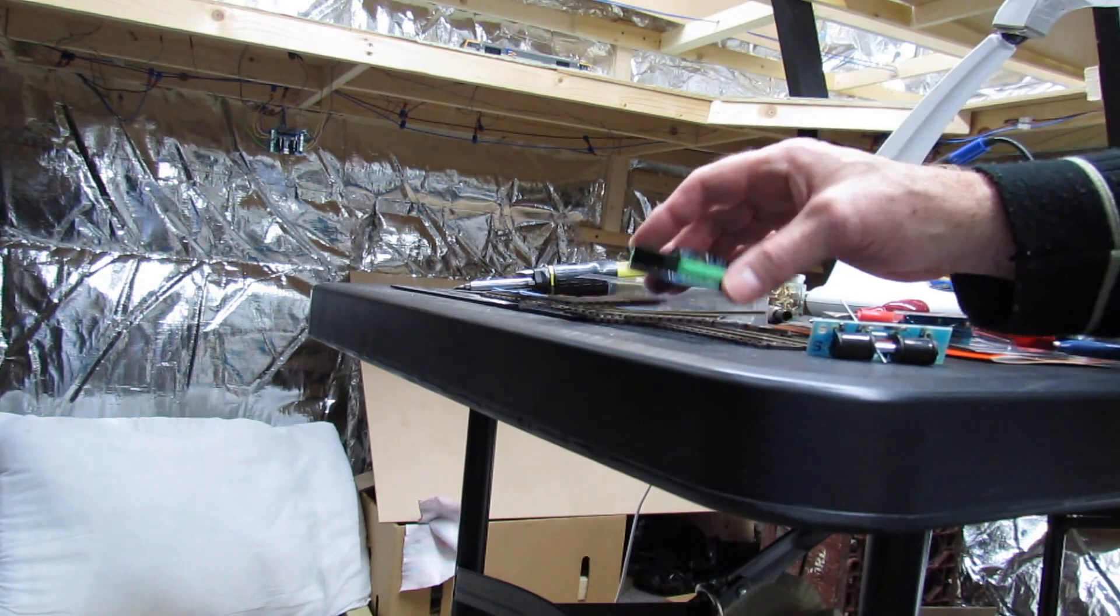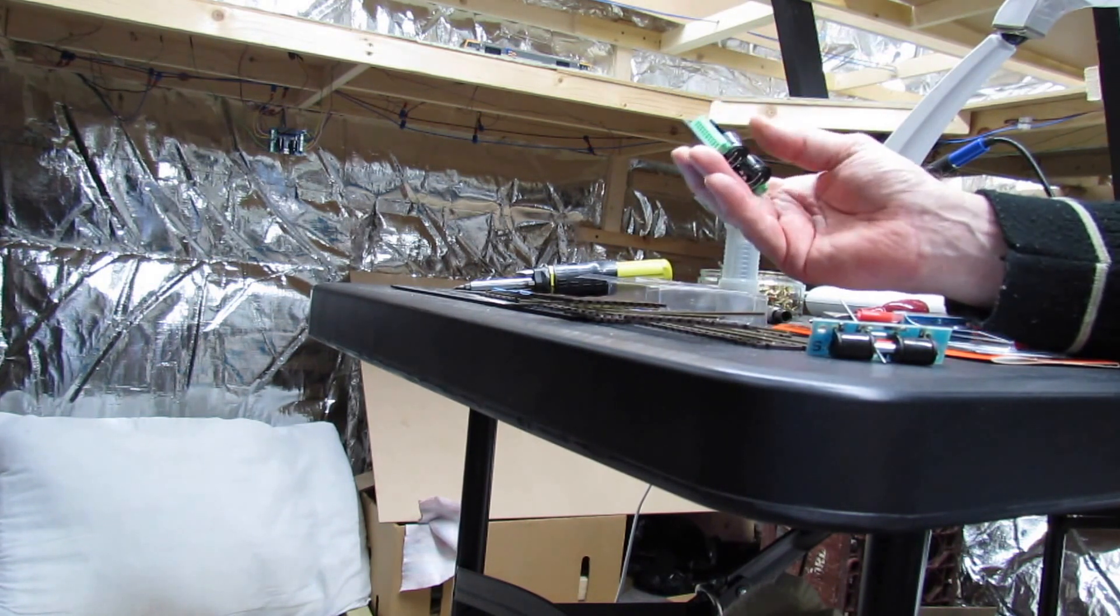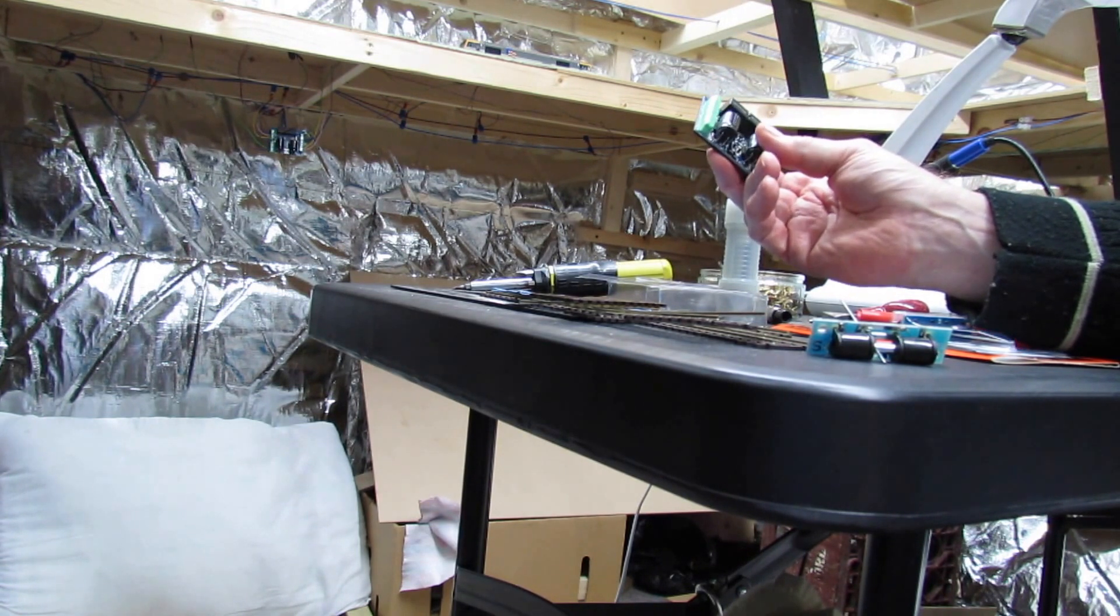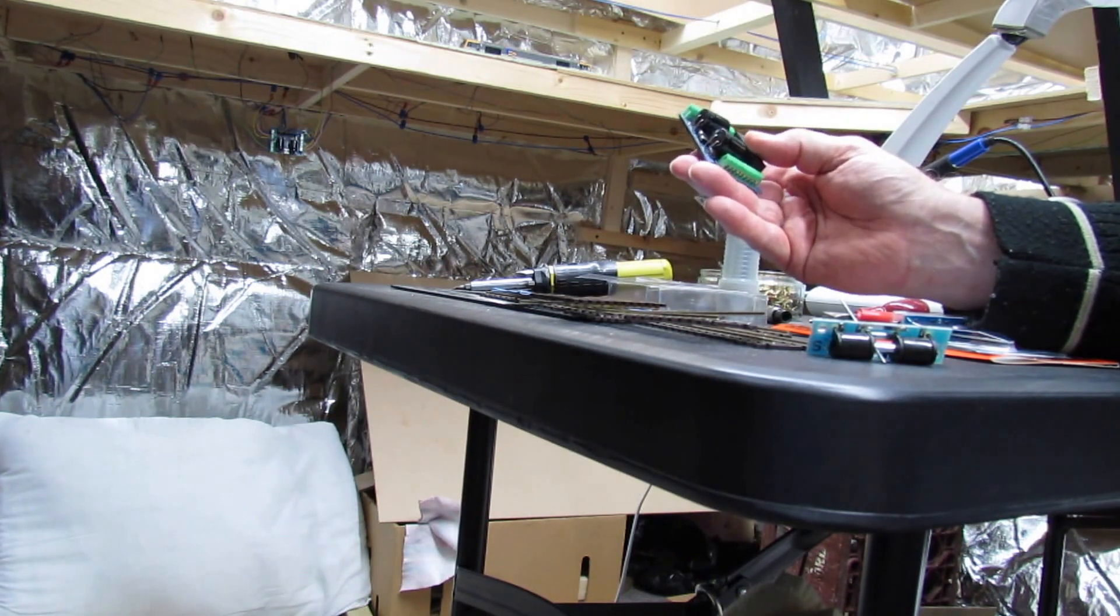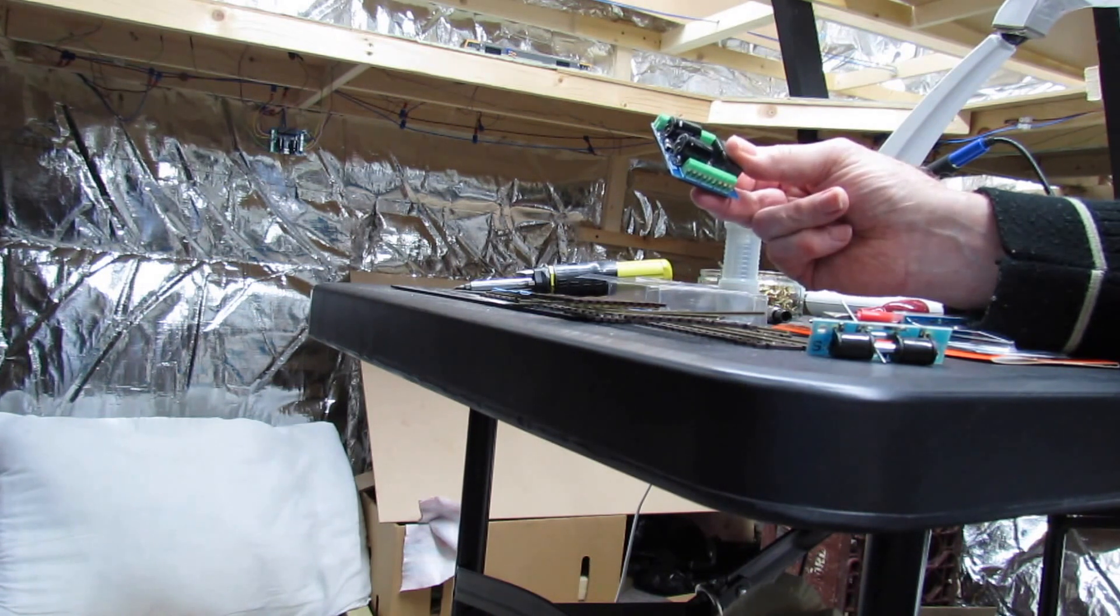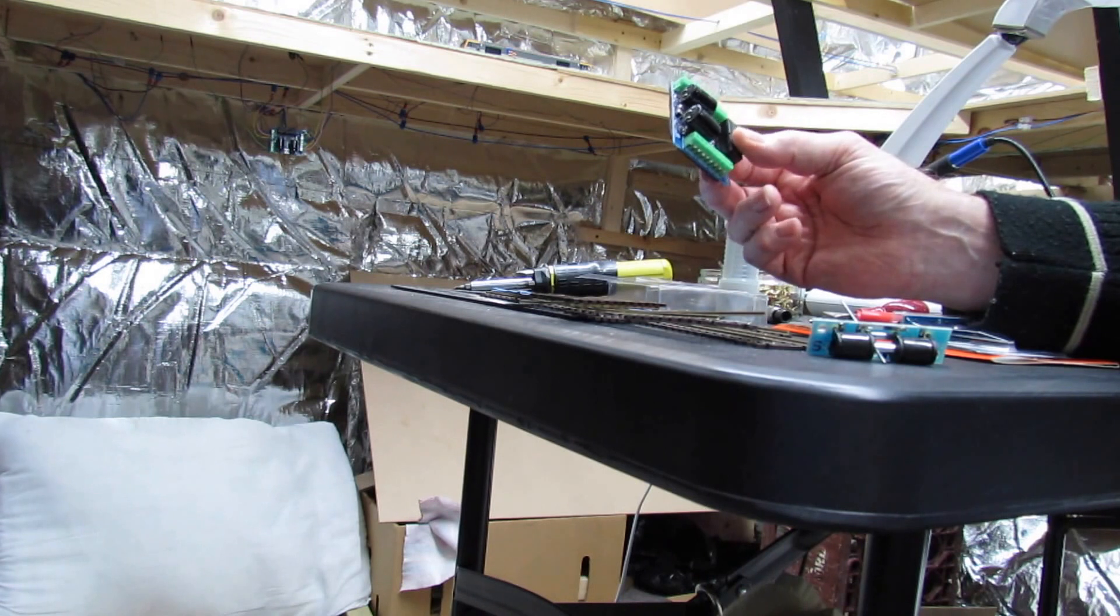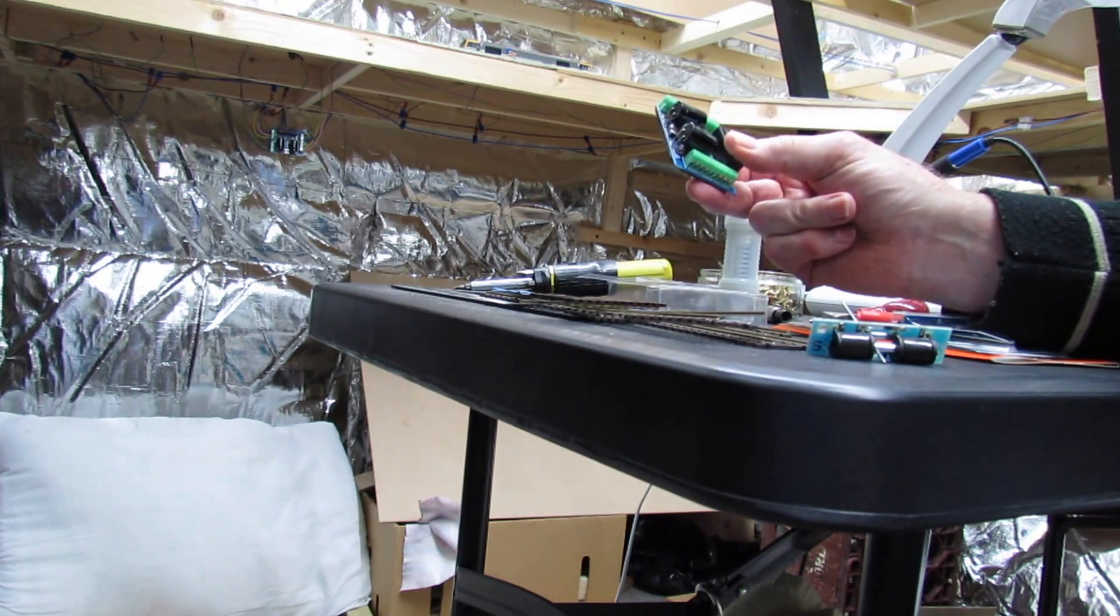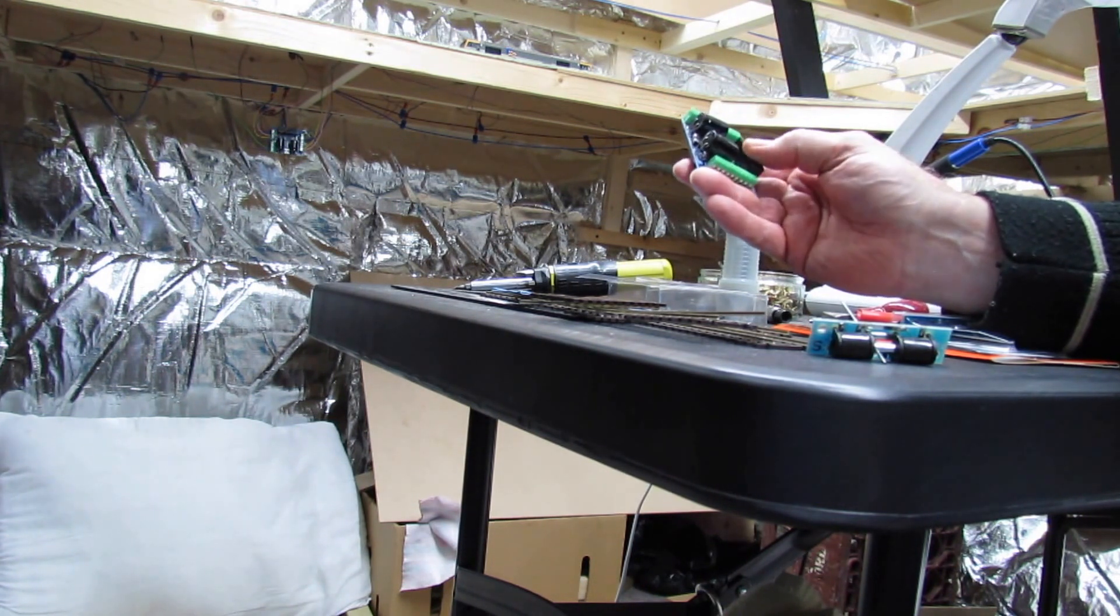On my layout, they're all changed using a point controller from DCC Concepts. There are two different types: the ADS and the ADS FX. They both come in two versions: a two version and an eight version. This is the two version and the eight version is basically four of these linked together.